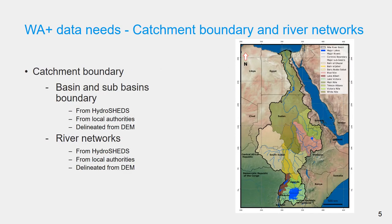Basin and sub-basin boundaries and river networks can be obtained from HydroSHEDS. It is a mapping product that provides georeferenced datasets including river networks, watershed boundaries, drainage directions, and flow accumulations, derived using high-resolution elevation data, which can also be obtained from the Shuttle Radar Topography Mission. Basin boundaries and river networks can also be obtained from local authorities. If these are not available, they can be delineated from digital elevation models using GIS.